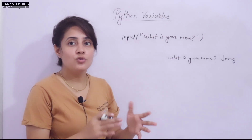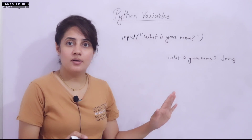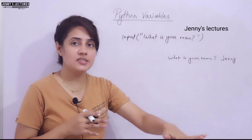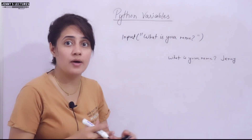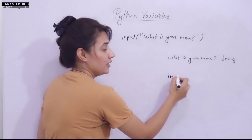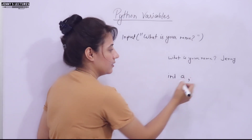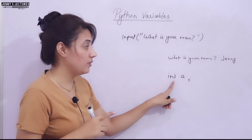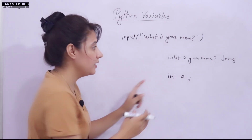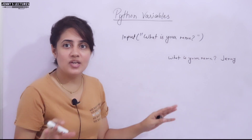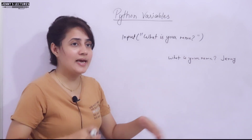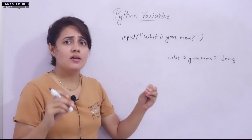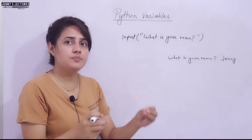There is no need to declare any variable in Python before it's used. In C or C++, you have to declare like 'int a' — you tell the compiler the name of the variable and its data type before using it. But here in Python, we don't need to declare any variable before it's used, and we don't need to tell any data type either.